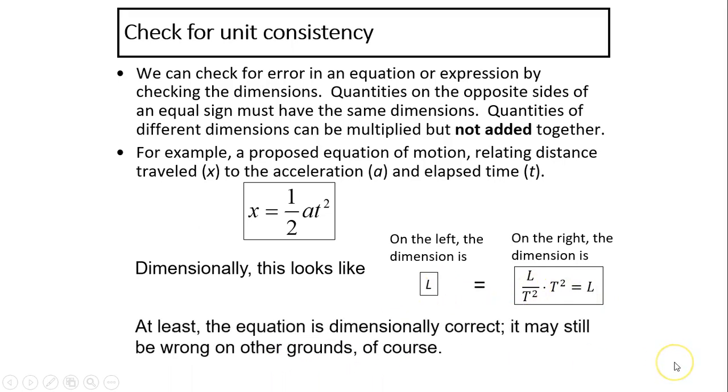That means at least the equation is dimensionally correct. It may still be wrong on other grounds, of course. That means this number could be wrong or there could be other terms.